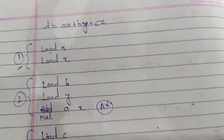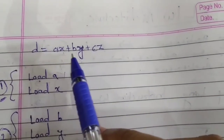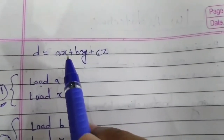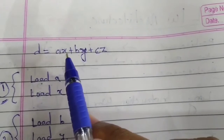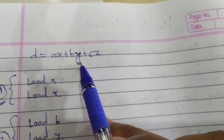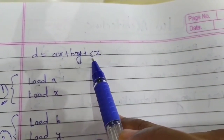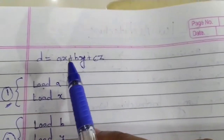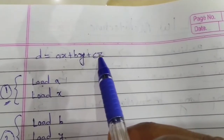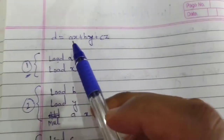Now let's take an example: d equals ax plus by plus cz. To calculate this value, the operations needed are: load a, load x, multiply; load b, load y, multiply; load c, load z, multiply; and then add the results together. After the multiplications are done, we add the values. In total there are around 11 operations.